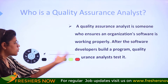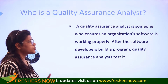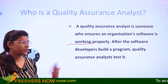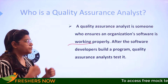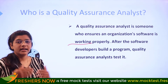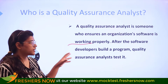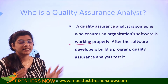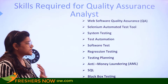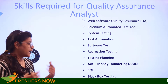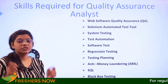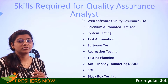So who is this person and what do they actually do? A quality assurance analyst is somebody who ensures whether an organization's software is working properly or not. After software developers build a program, the quality assurance analyst tests it — it is all related to the testing part, giving assurance that the particular product or program that has been built is safe to go. To become one, the key skills include system testing, test automation, software testing, test planning, anti-money laundering, SQL, and black box testing. These are the foundational skills you need to implement to start your career.